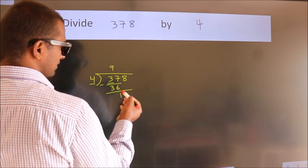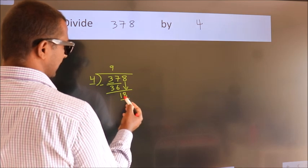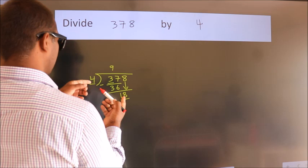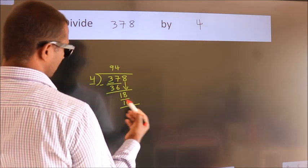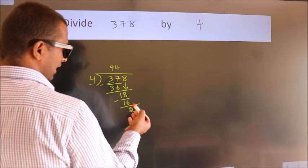After this, bring down the next number. So, 8 down, giving us 18. A number close to 18 in the 4 table is 4 times 4 equals 16. Now we subtract and get 2.